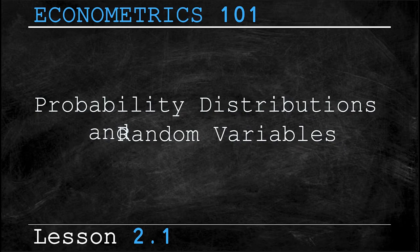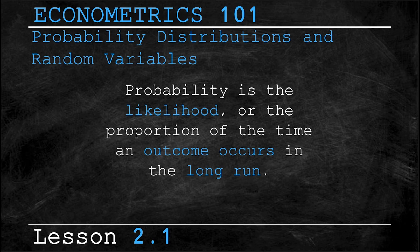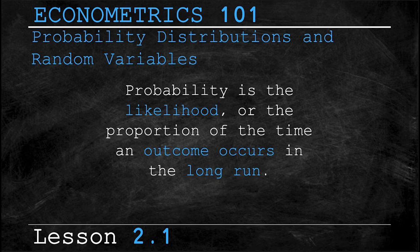Probability can be defined as the likelihood or the proportion of time that an outcome occurs in the long run. For example, if you were to flip a coin there is a 50% probability of you landing on heads and a 50% probability of you landing on tails.